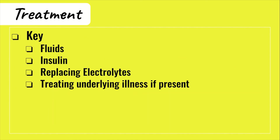The treatment of DKA is built around four pillars: treating the underlying illness if there is one, volume resuscitating the patient with fluids, administering insulin, and replacing electrolytes. All four of these things need to happen in order to treat your DKA patients.